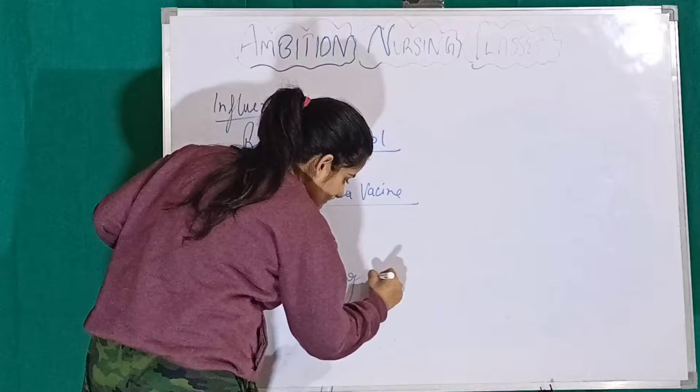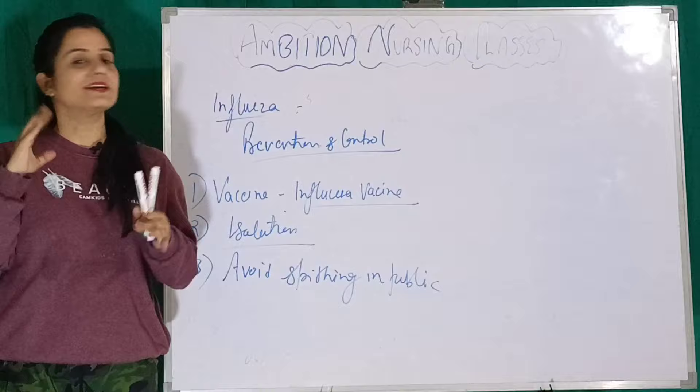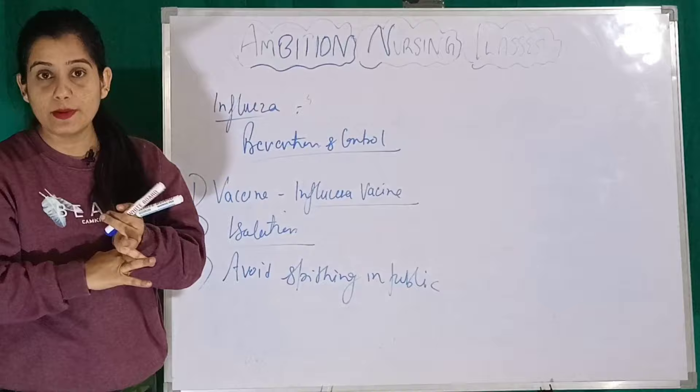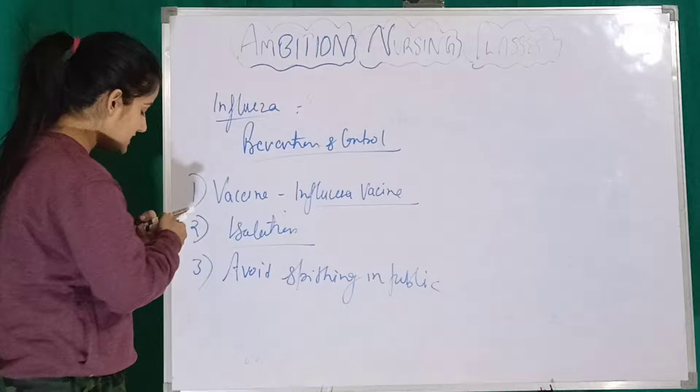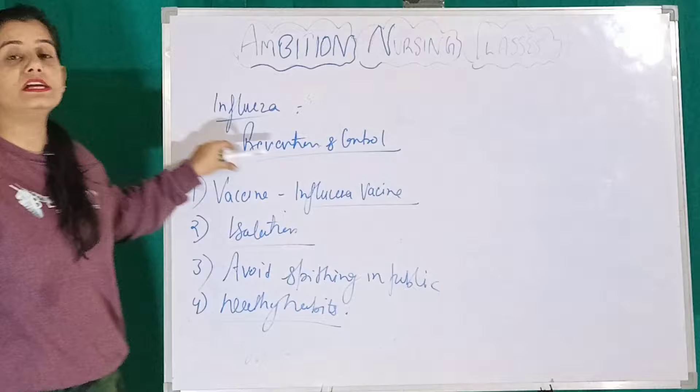The second thing is isolation. Next, people must be educated about healthy habits. Healthy habits include: use of mask, hand hygiene, avoid crowded places, healthy diet, avoid drinking, and avoid smoking. So these were all the prevention and control measures for Influenza.